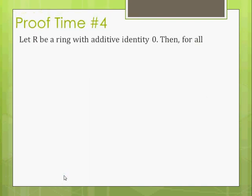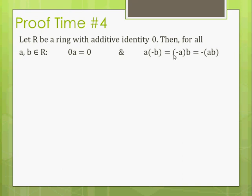The fourth and final proof. Let R be a ring with additive identity zero. Then for all elements in the ring we're going to show two things: zero times a equals zero, and a times negative b equals negative(ab). I really like this one — because in normal algebra, of course zero times anything is zero, but we don't really understand that at a fundamental level. Now that we're in advanced math, we can look at these reasons and have a structure for understanding why. We're going to start with the brilliant equation: zero plus zero equals zero.